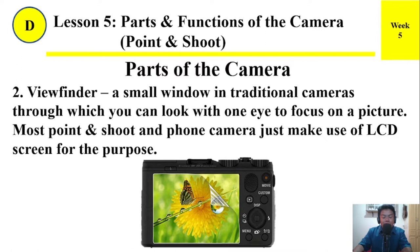Number 2: Viewfinder. A small window in traditional cameras through which you can look with one eye to focus on a picture. Most point and shoot and phone cameras just make use of an LCD screen for this purpose.